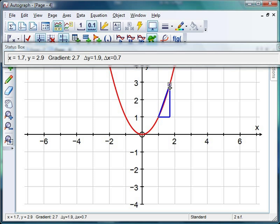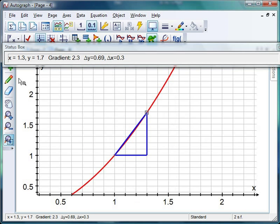However, if I start moving this a little bit closer, look what happens to the gradient. At the moment it's 2.5, now it's 2.4, now it's 2.3. I think I'm going to need to zoom in, so I'm clicking on zoom in box, I'm going to drag around here, and now let's keep moving, let's move it a bit closer.